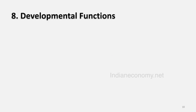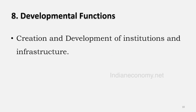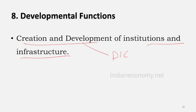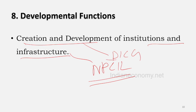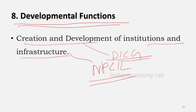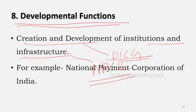The eighth function is the development function. RBI has created and developed a set of institutions and infrastructure — for example, the Deposit Insurance and Credit Guarantee Corporation, the Clearing Corporation, and the NPCI. These institutions were created by RBI to promote monetary and financial transactions, demonstrating its tremendous development role in the economy.